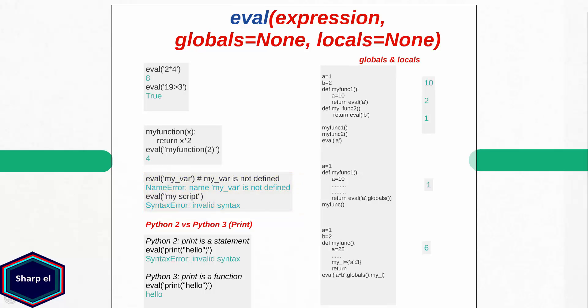I want to point out a small difference between eval in Python 2 and Python 3. In Python 2, print is a statement whereas in Python 3, print is a function. So in Python 2 you cannot pass print in the eval function as a string expression. Now let's look at the next two arguments: globals and locals. If you remember from earlier, globals and locals are namespaces. You can either pass your own namespace dictionary or you can pass the built-in globals and locals functions as arguments.